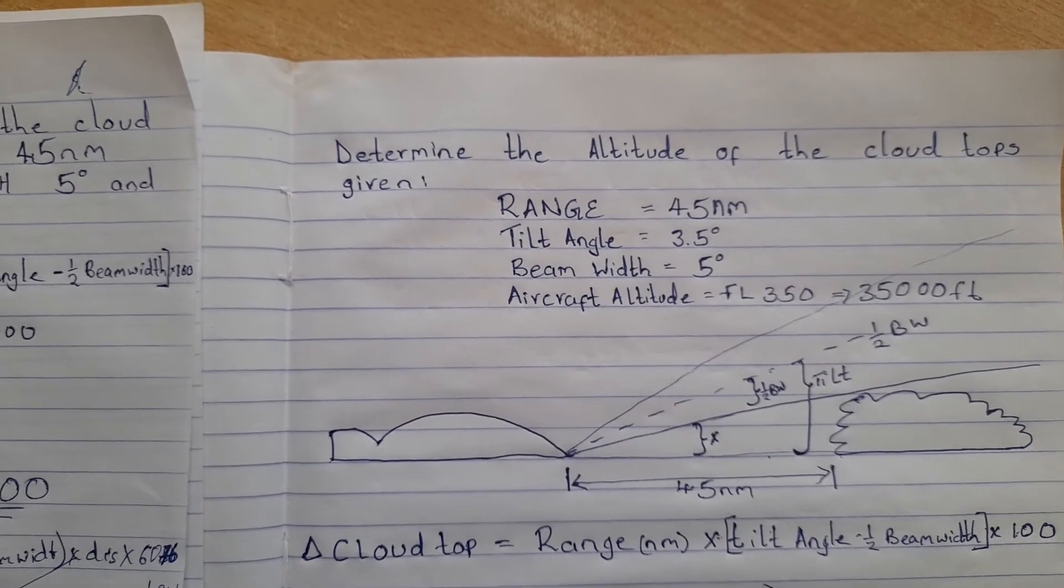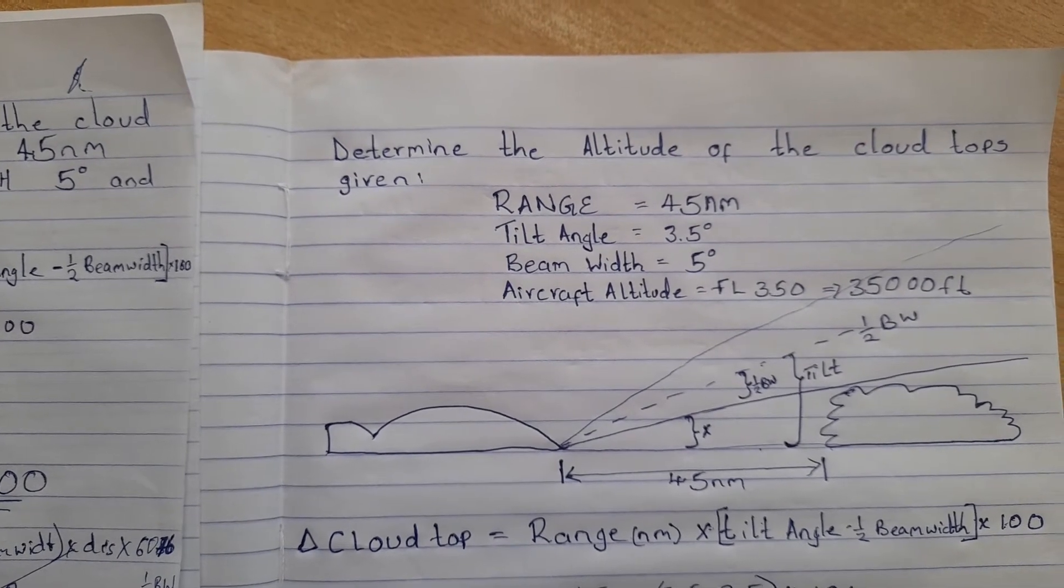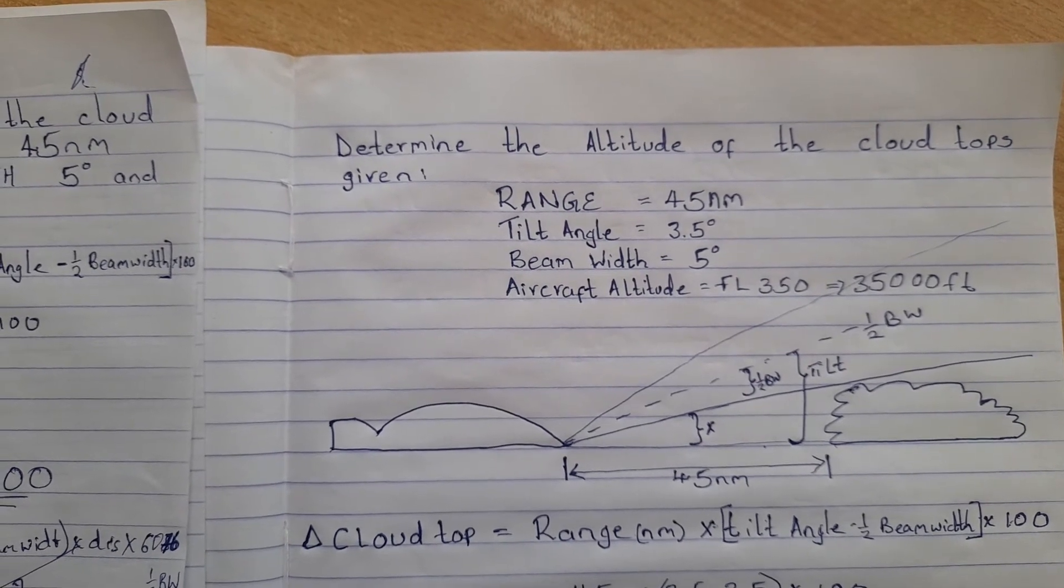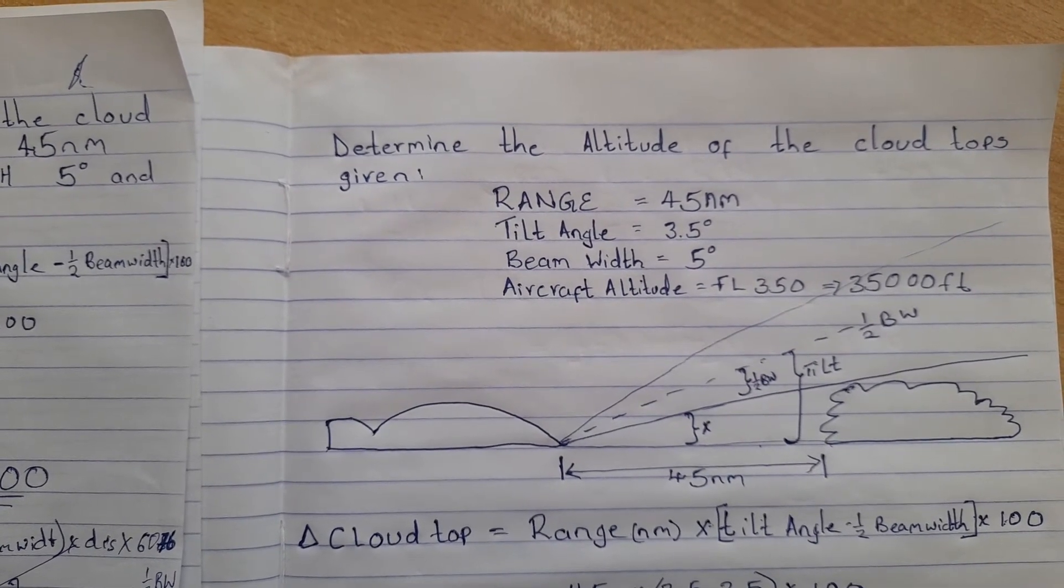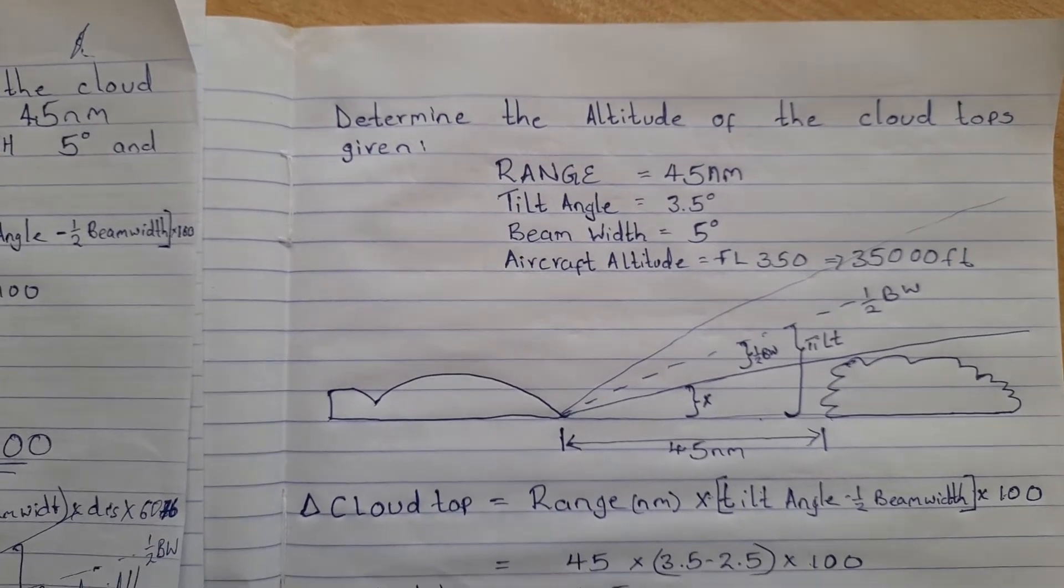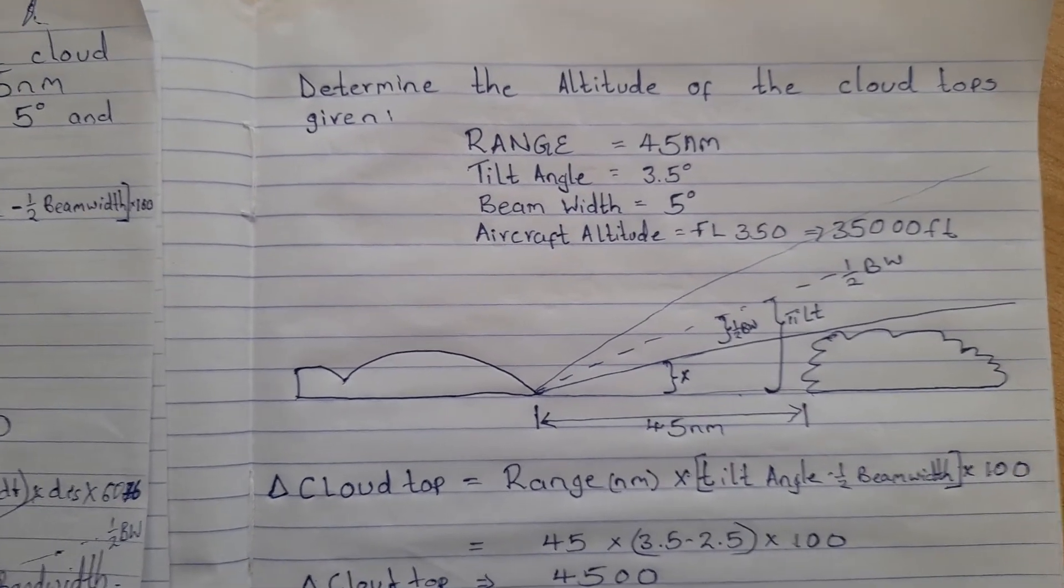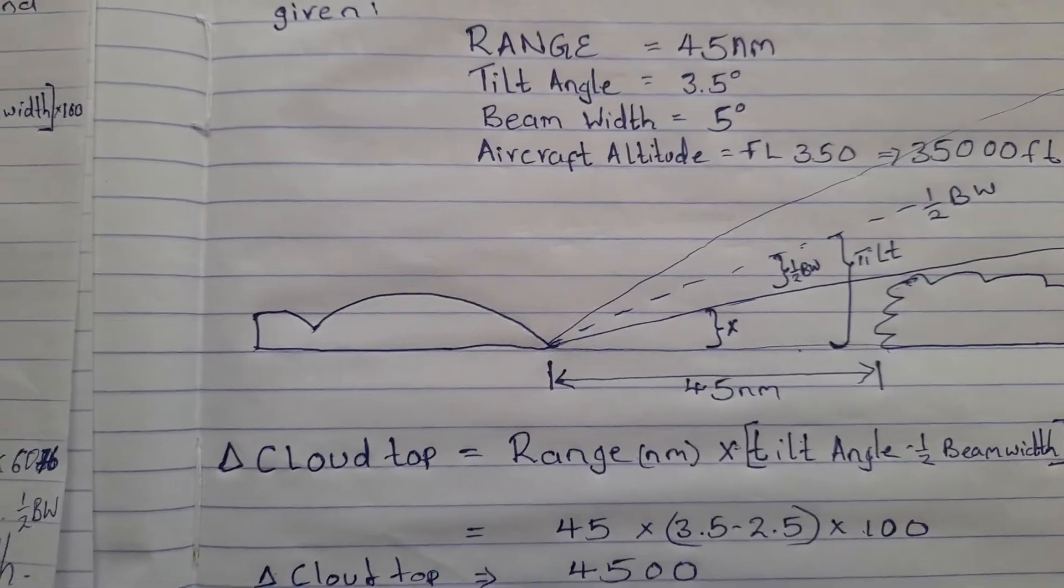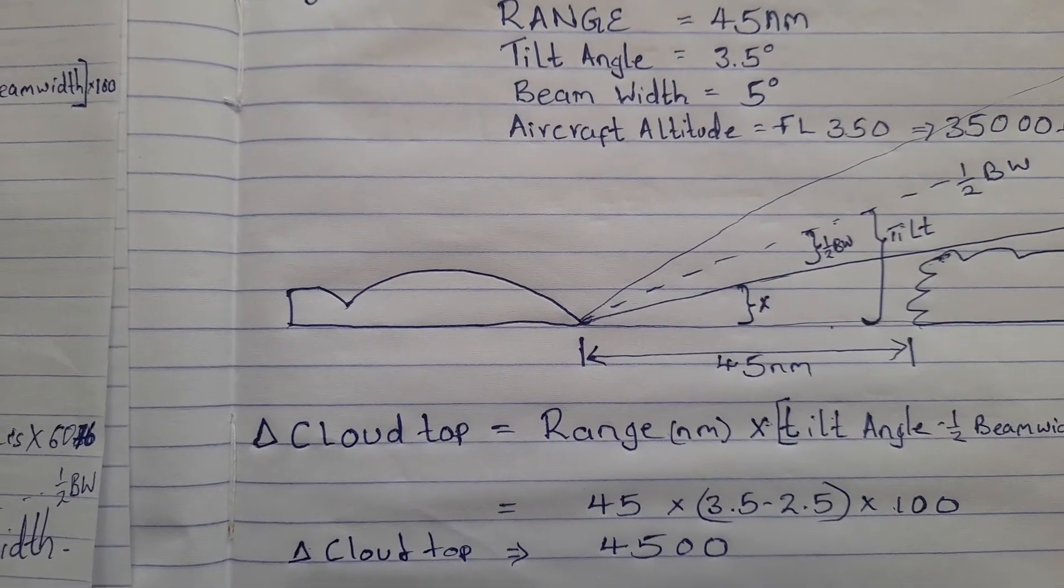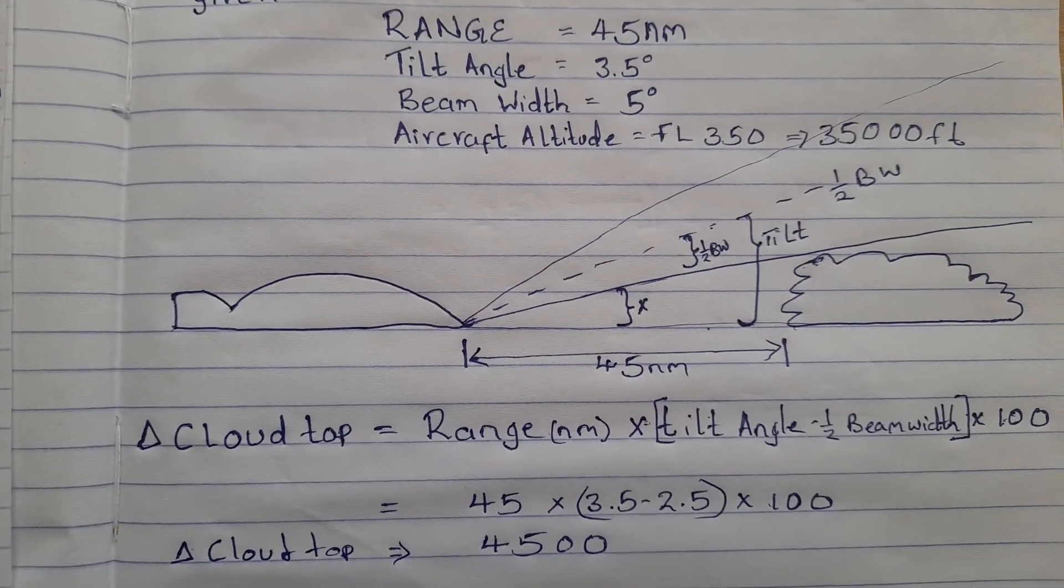You can use the simple formula: the range, 45 nautical miles, times the difference between the tilt angle minus the half beam width times 100. So it's 45 nautical miles times (3.5 minus 2.5) times 100. The change in the cloud top is given as 45 hundred feet.